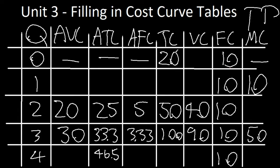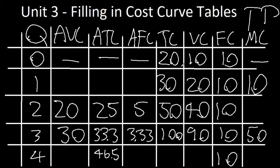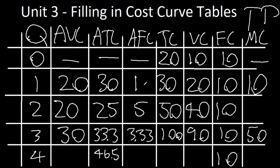We can also easily find the variable cost here, which is total cost minus fixed cost, which is 10. And since we know the marginal cost, 10 plus 20 is 30. Variable costs — the difference between total cost and fixed cost — is 20. And here it's much easier to calculate the averages as the quantity is just 1, so we basically just rewrite all of it.